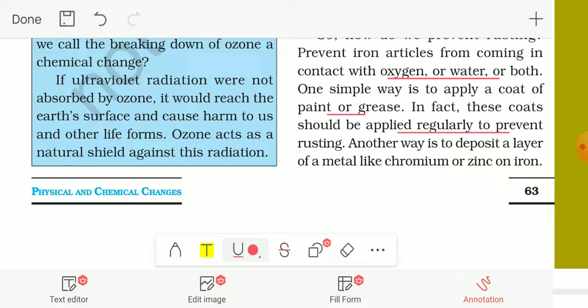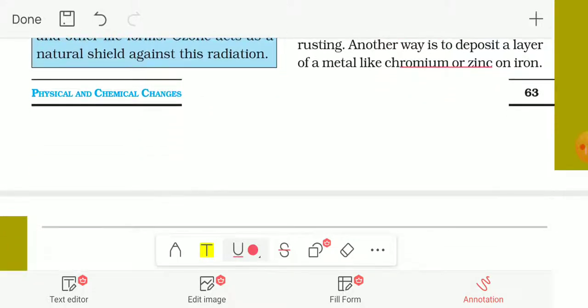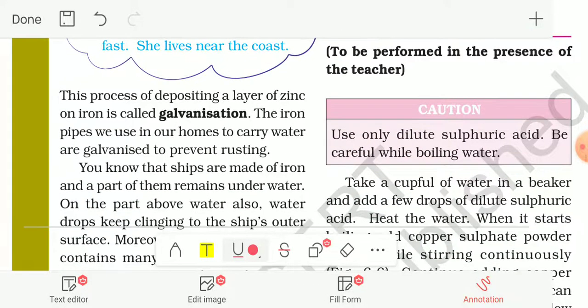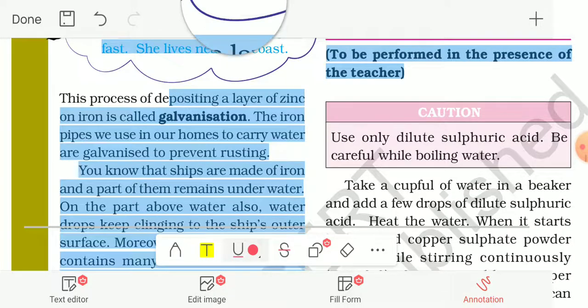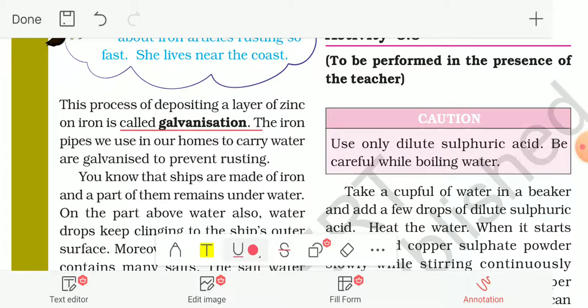Another way is to deposit a layer of metal like chromium or zinc on iron. This process of depositing a layer of zinc on iron is called galvanization.